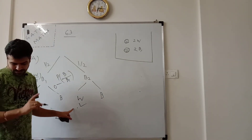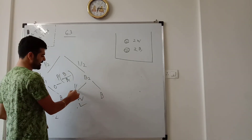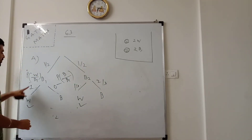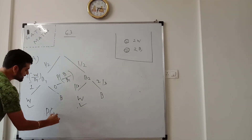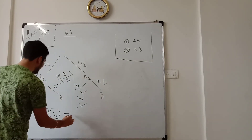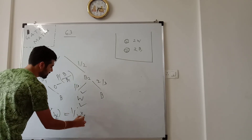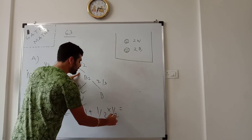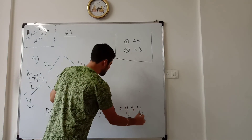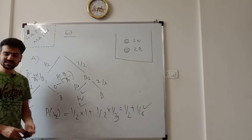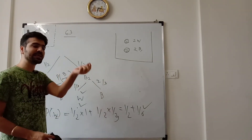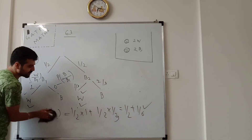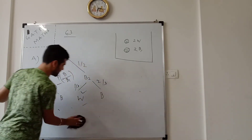Option C: bin 1 has 1 white ball and 2 black balls, so white probability from bin 1 is 1/3 and black is 2/3. The total chance of white ball is: half into 1 (from the other bin) plus half into 1/3, which is 1/2 plus 1/6. So option C gives a probability higher than 1/2.